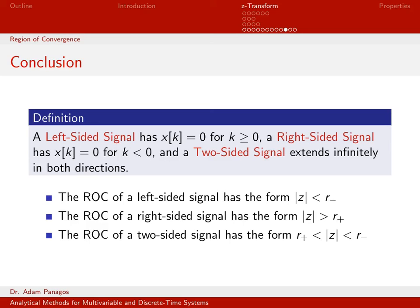What we've proven is that any time we deal with a left-sided signal, its region of convergence has the form magnitude of Z less than R minus — always inside some circle in the complex plane. Similarly, for a right-sided signal, the region of convergence always has the form magnitude of Z greater than R plus.